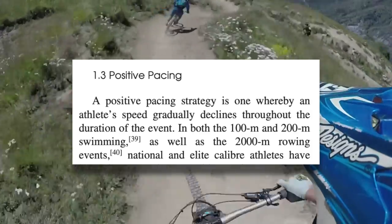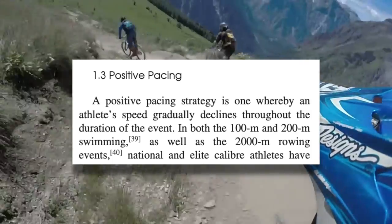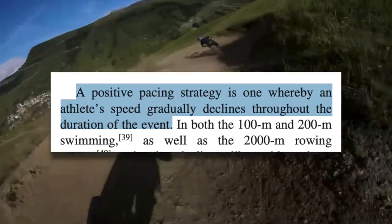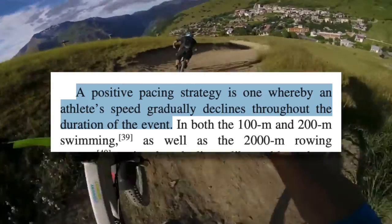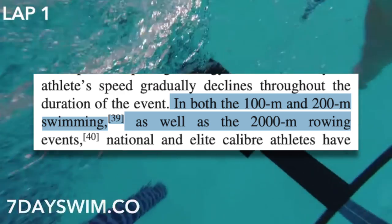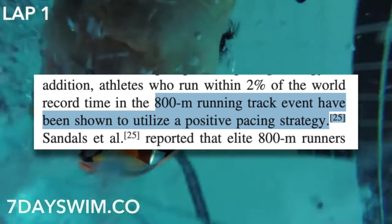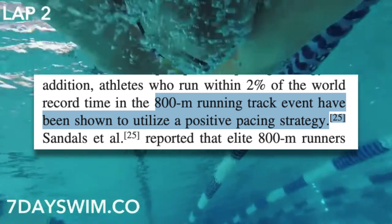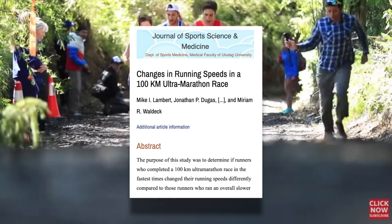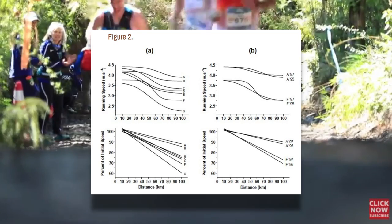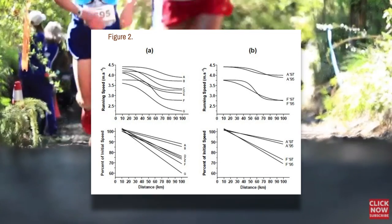After this, we have the positive pacing strategy — the opposite of the negative pacing strategy. Positive pacing means that speed gradually declines throughout the duration of an event. For most self-paced events, excessive positive pacing is considered something to be avoided, as slowing down throughout a race almost always leads to poorer performance — although not always. 100m and 200m swimming, 2000m rowing, and 800m running all typically follow positive pacing. And whether intended to or not, this is usually the pacing strategy adopted in ultra-endurance events lasting over four hours.